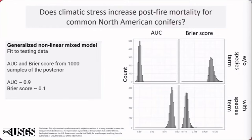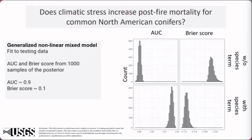How well did this model fit the data? We left out approximately a third of our data as testing data and calculated the AUC and the Brier score. The Brier score is equivalent to the mean squared error as applied to predicted probabilities — the lower, the better the calibration. The AUC was approximately 0.9 under both conditions with and without species terms, suggesting excellent discrimination. The Brier score was also quite low, suggesting good calibration.